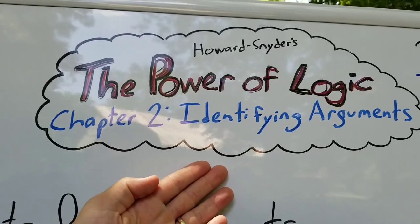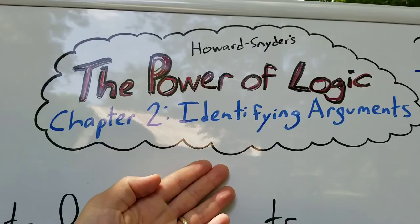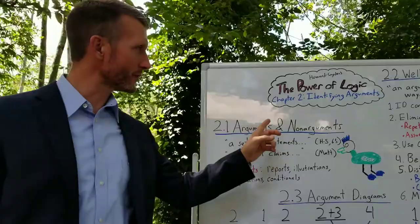Howard Snyder's The Power of Logic. Chapter 2: Identifying Arguments. Section 2.1: Arguments and Non-Arguments.